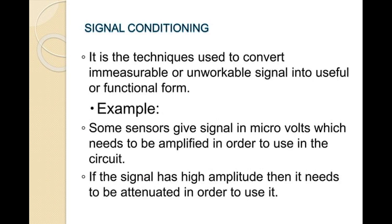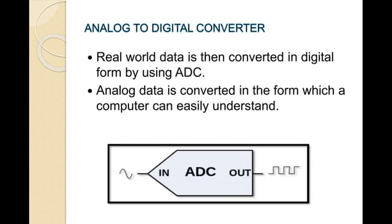Signal conditioning: when we get data from the inputs, we need to condition it. That means it is used to convert a raw signal into a usable form. For example, some sensors give a signal in microvolts, which needs to be amplified in order to use in circuits. Next, analog-to-digital converter: in real-world data, we need to convert the data into digital form using an ADC. Analog data is converted into a form that the computer can easily understand.